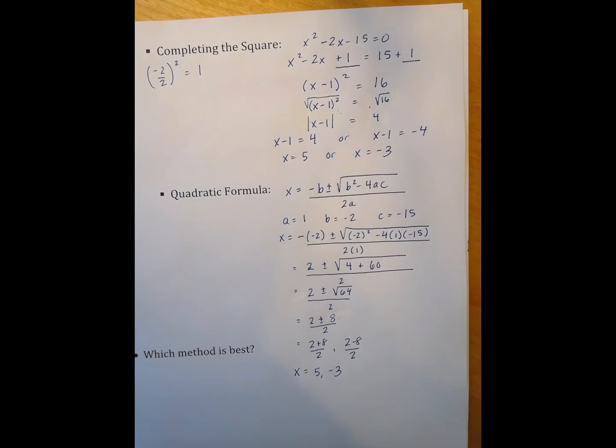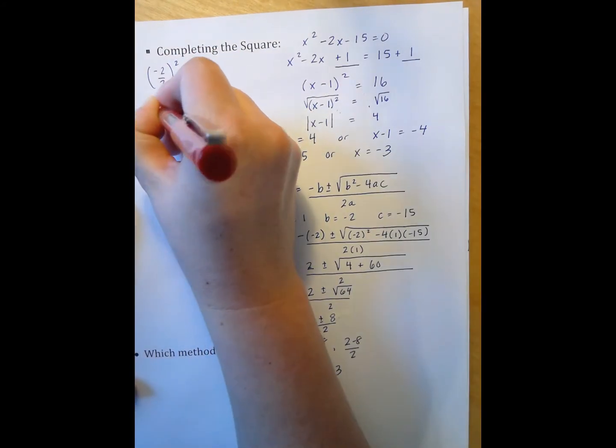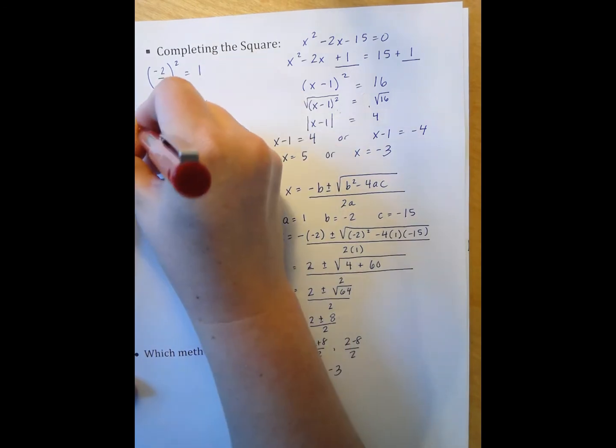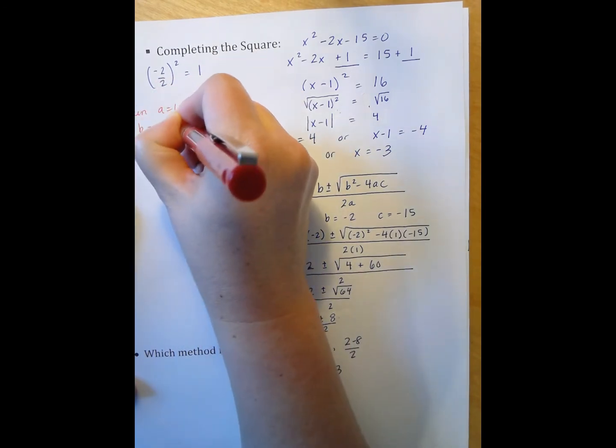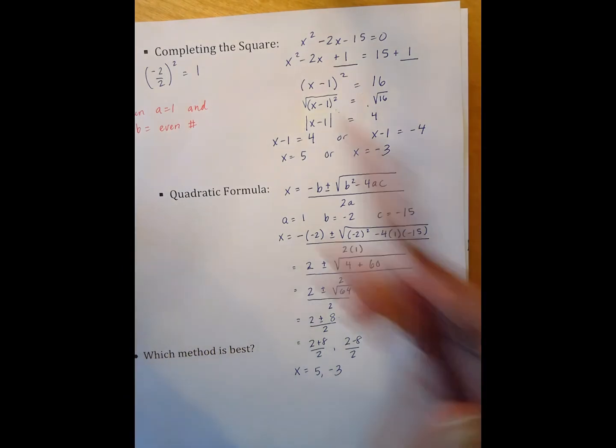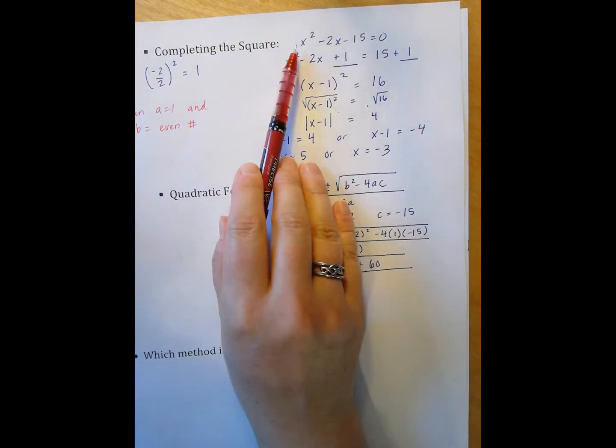So these five methods all serve a purpose and they all serve a purpose in a different context. The question always is which method is best? Most people gravitate towards one method at some point and most people have a favorite method. For instance, generally speaking, my favorite method is completing the square. However, completing the square can be hard at times. So I really like completing the square when a equals 1 and b is an even number.